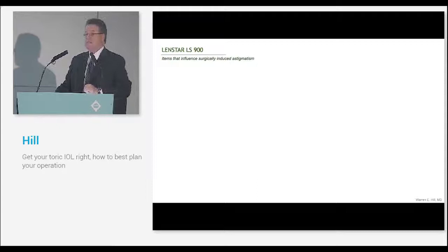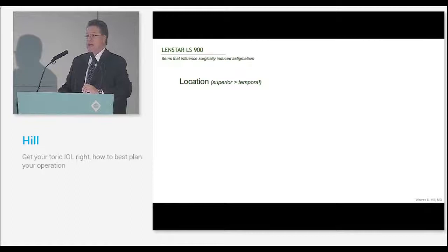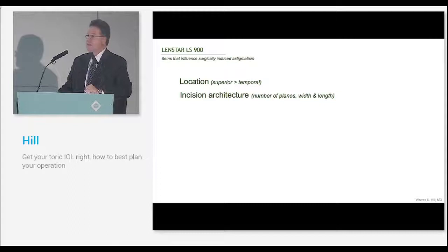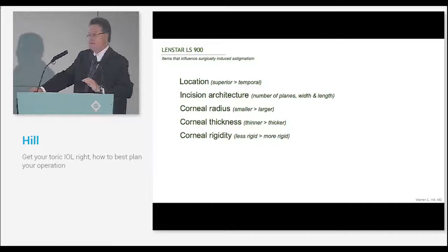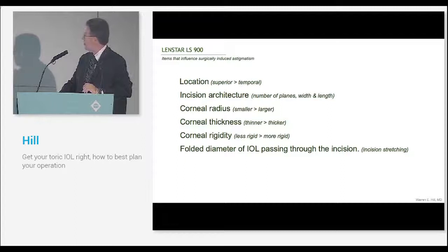What are some of the things that influence surgically induced astigmatism? When you go to this site, you're going to notice there are going to be variations from one patient to the next. The reason for that is that where the incision is located is going to determine how much surgically induced astigmatism you're going to have. Also the architecture. Certain types of incisions give more surgically induced astigmatism than others. Those of you who are physicists in the room, remember that Laplace's law says that the effectiveness of an incision in a sphere is related to the radius, the thickness, and rigidity. So each person is unique and individual. And, of course, the folded diameter of the IOL passing through the incision.